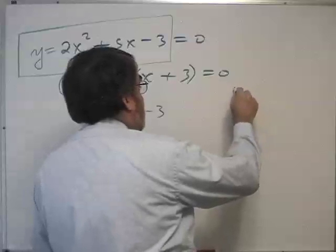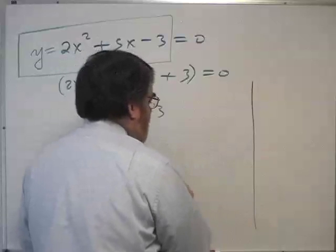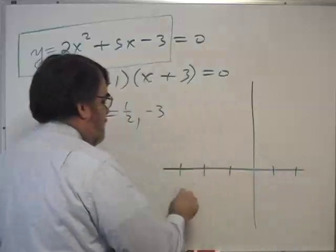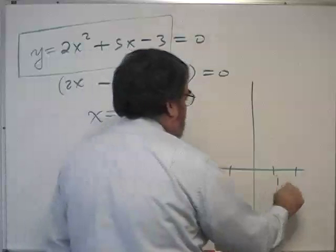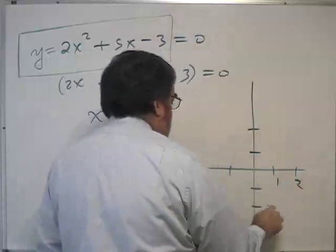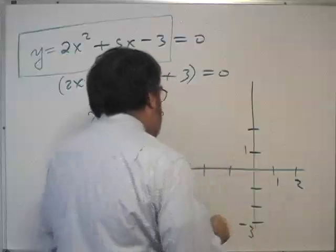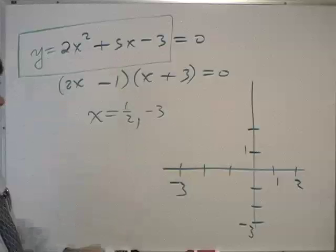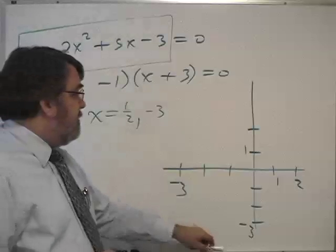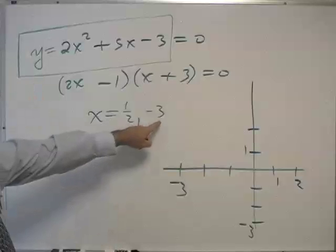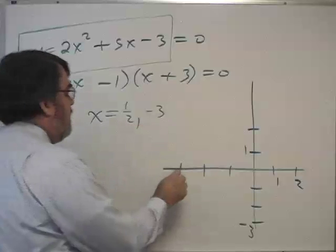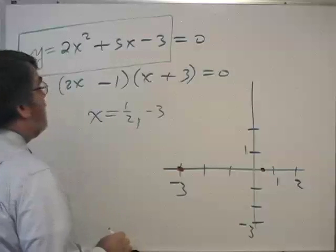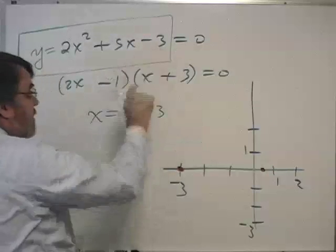So, I'm just going to kind of sketch it here. It won't be that precise. All right. So, it turns out that this function, its graph, crosses the x-axis at negative 3 and at one half. And it also happened to have a y-intercept of negative 3.